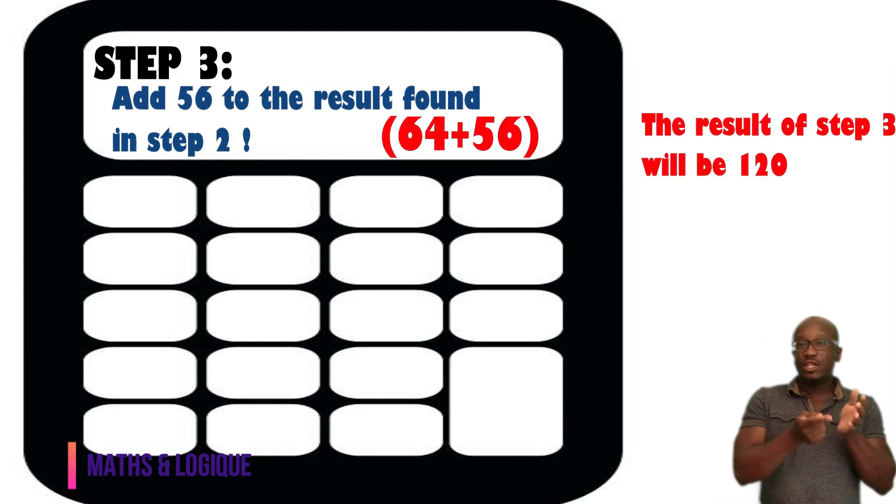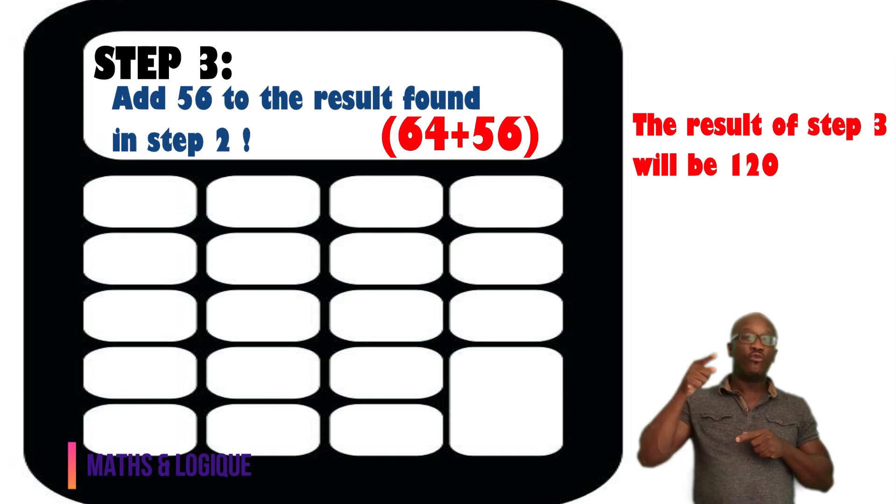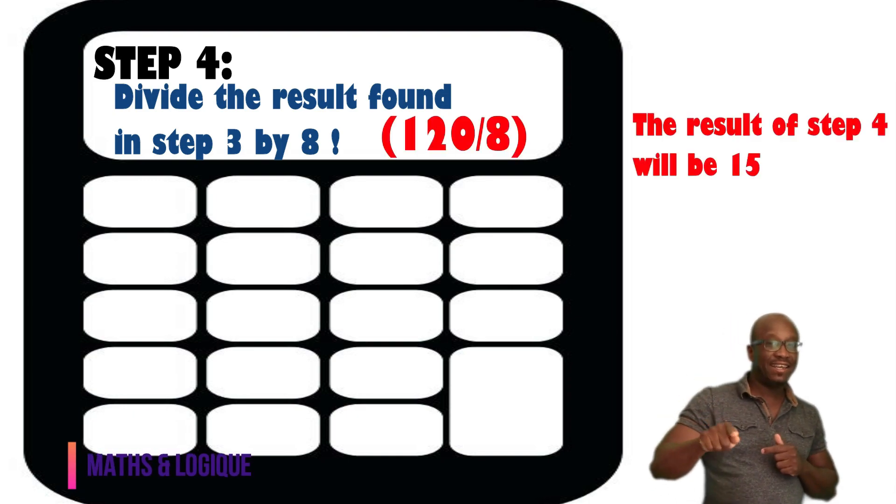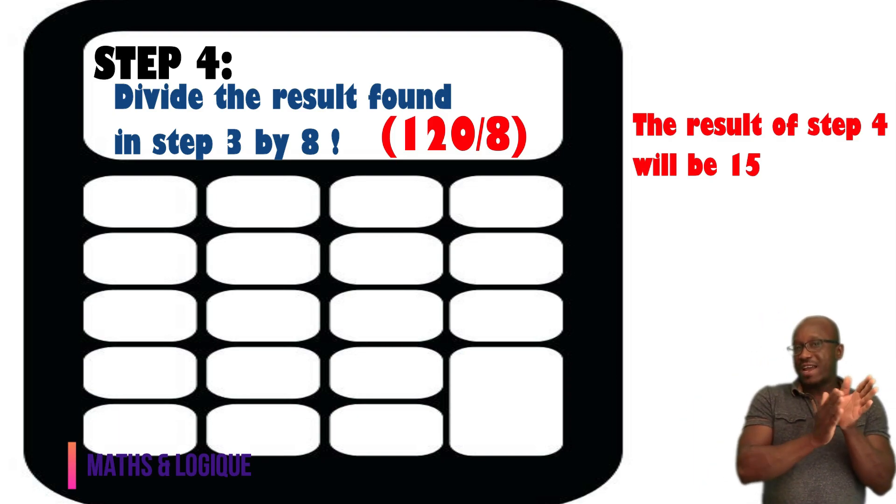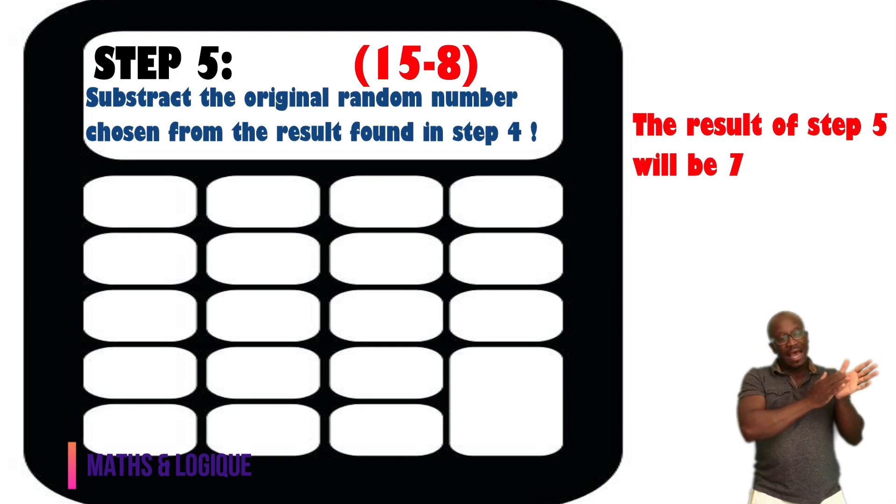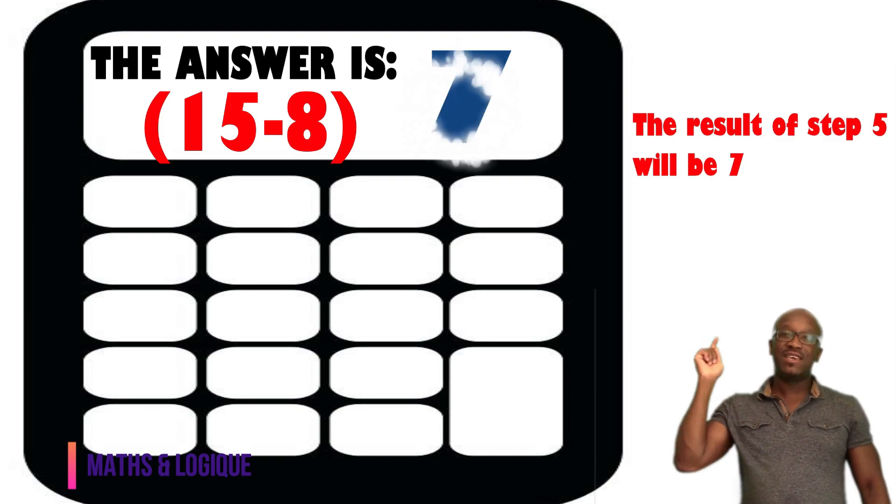Then, take the new value and add 56 to this value. Now, we are going to do a fourth step. You will ask this friend to divide this new value by 8. Finally, you will tell him at the last step to take the value that he chose from the beginning and subtract it from the last value. And guess what? The answer is gonna be 7.